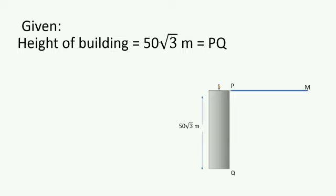Here is the observer, P. Let PM be the horizontal line. The car is coming towards the building. Its position is at R. Then PR is the line of sight, so MPR becomes the angle of depression which is equal to 60°.